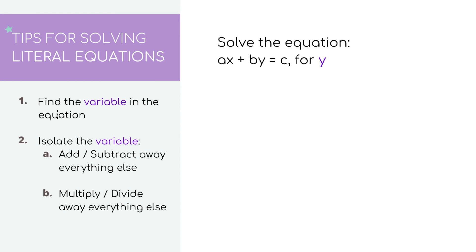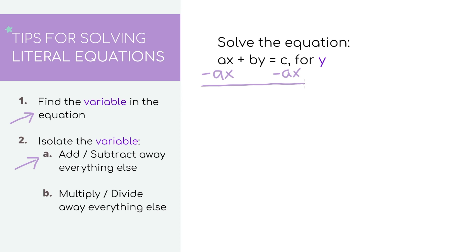Here we have another literal equation. For step one, let's find the variable — for this one, we're actually solving for y, which is located here on the left side. Our end goal is to get an expression that looks something like y equals whatever. On the left side we have a positive ax, so to get rid of it let's do the opposite and subtract ax from both sides. ax minus ax cancels out, and we bring down by, giving us by equals c minus ax. We can't simplify further because they're not like terms.